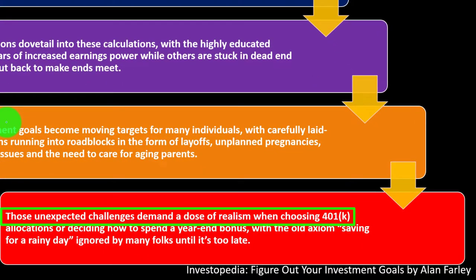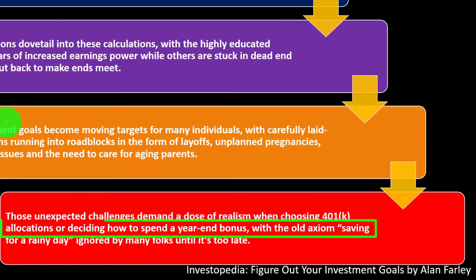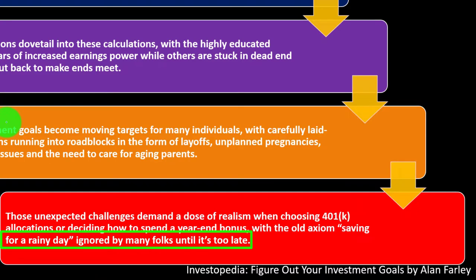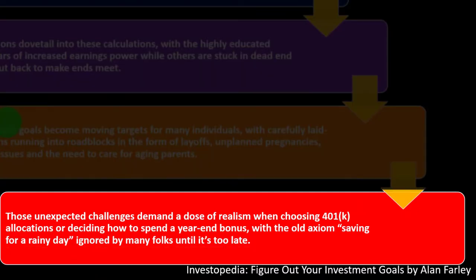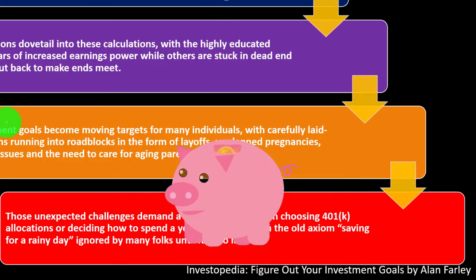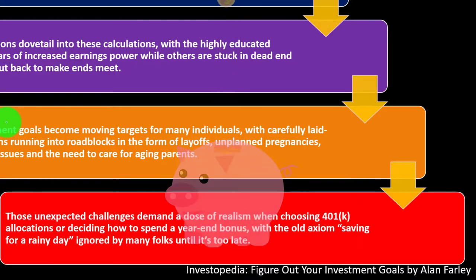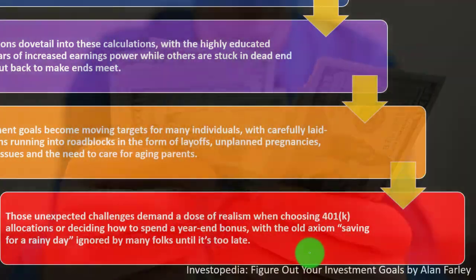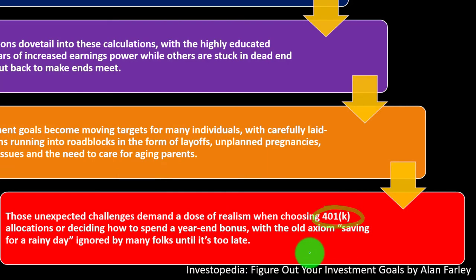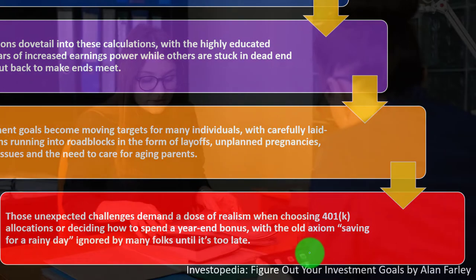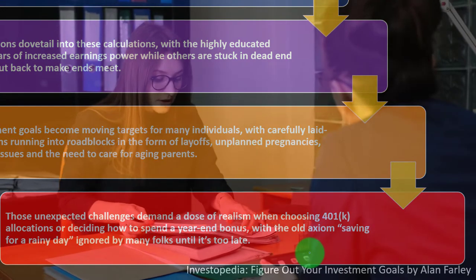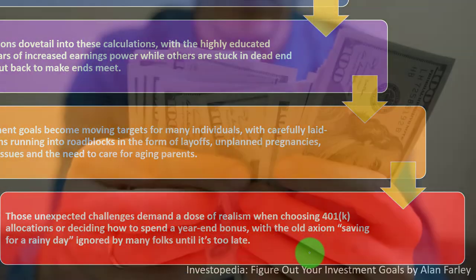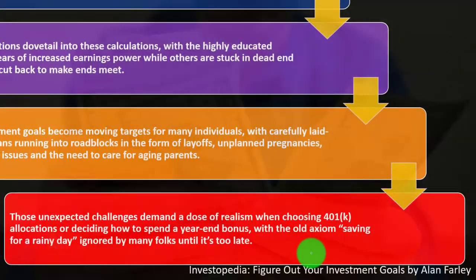Unexpected challenges demand a dose of realism when choosing 401k allocations or deciding how to spend a year-end bonus, with the old axiom 'saving for a rainy day' ignored by many folks until it's too late. This often puts us off the rails for our savings plan but doesn't stop the spending, meaning we put less money into our 401k — one of the biggest benefits an employer can provide.